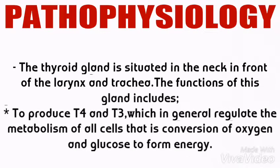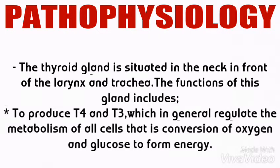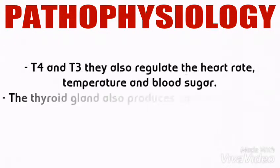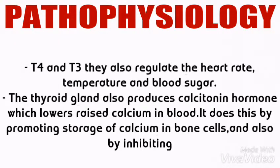The thyroid gland is situated in the neck in front of the larynx and trachea. The functions of the thyroid gland include producing thyroxine (T4) and triiodothyronine (T3), which in general regulate the metabolism of all cells — that is, the conversion of oxygen and glucose to form energy.